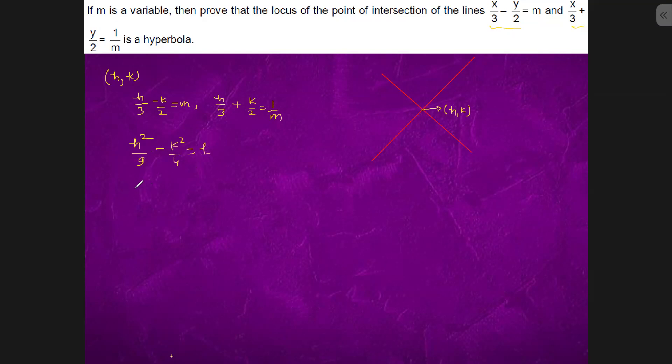Now we will substitute h and k with x and y. It will come out to be x square by 9 minus y square by 4 equals 1. This is a hyperbola.